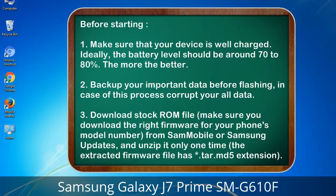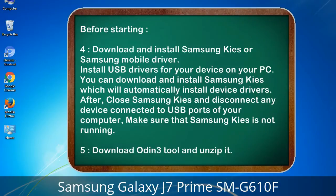Make sure you download the right firmware for your phone's model number from Sammobile or Samsung updates, and unzip it only one time. The extracted firmware file has a .tar.md5 extension. 4. Download and install Samsung KIS or Samsung mobile driver to install USB drivers for your device on your PC. After installation, close Samsung KIS and disconnect any device connected to USB ports, making sure Samsung KIS is not running. 5. Download Odin 3 tool and unzip it.